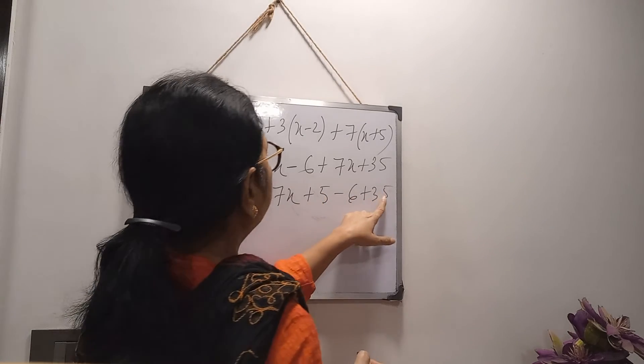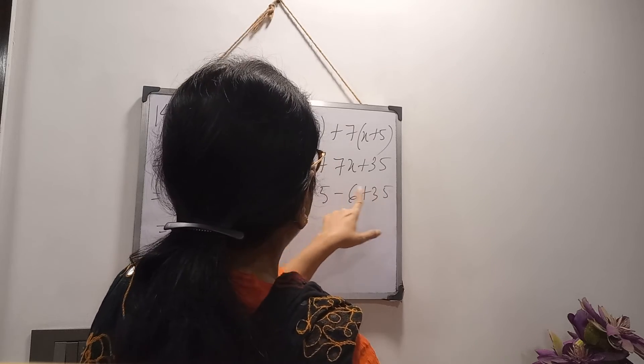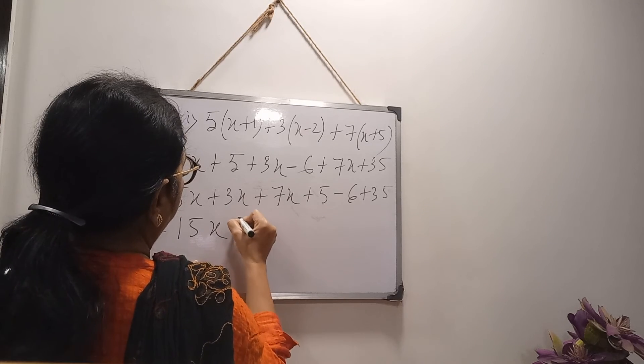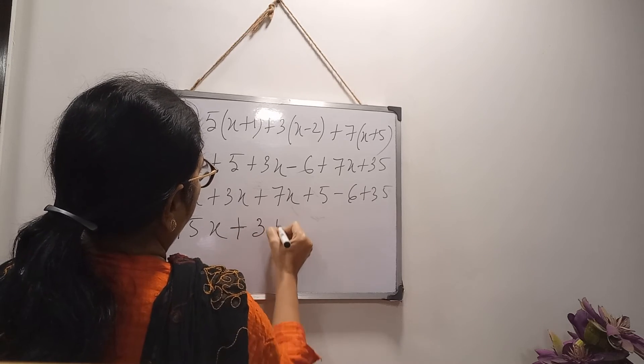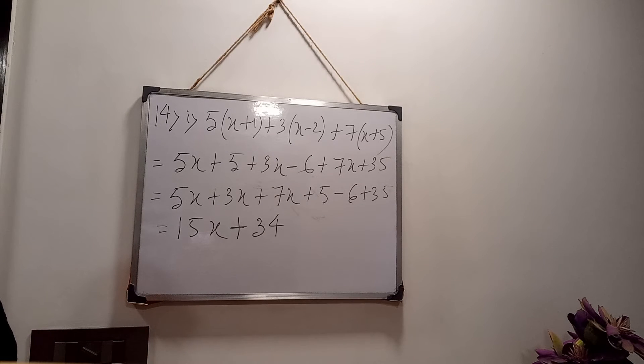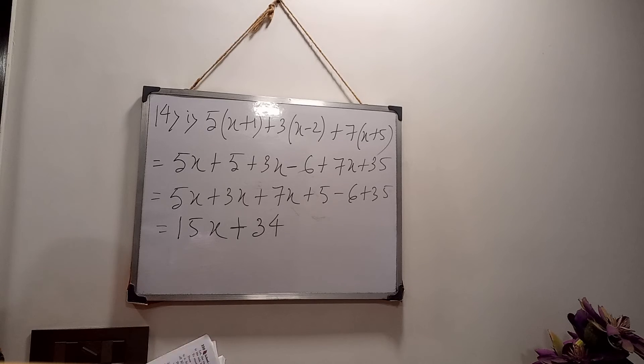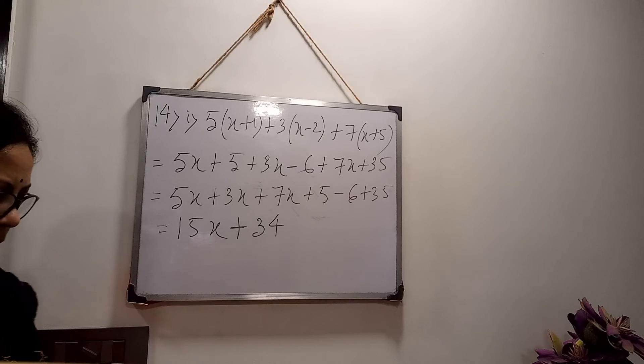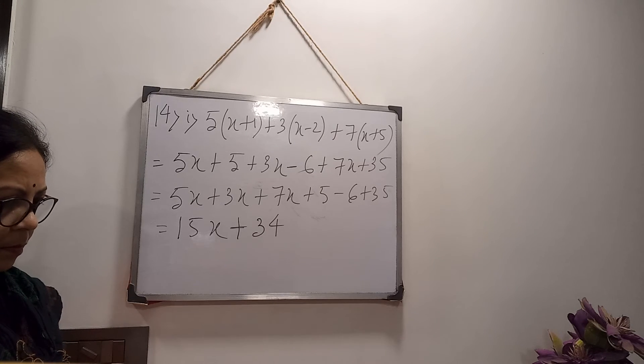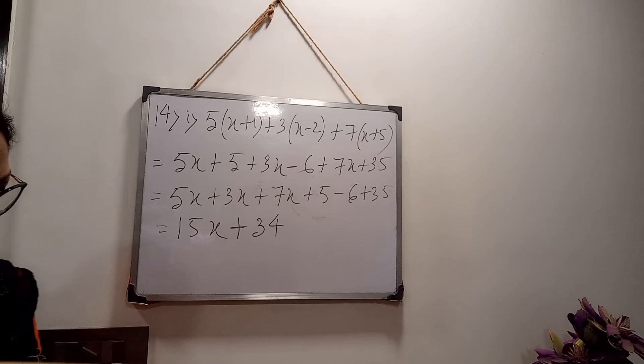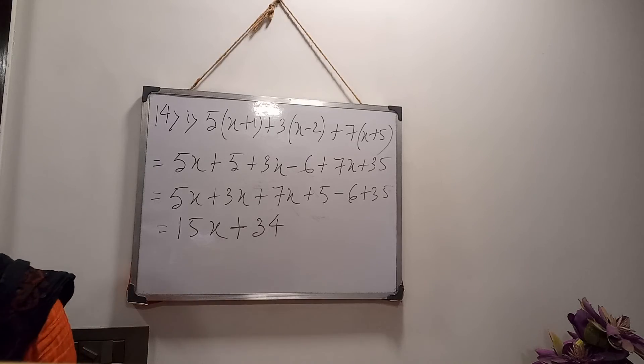And there is 35 and 5, both are positive. We will add 35 plus 5 is 40, 40 minus 6. Here 40 is greater. This is the answer. Here 15x plus 34. So now 141, 15x plus 34, this is the simplified form. Clear? Then next one.